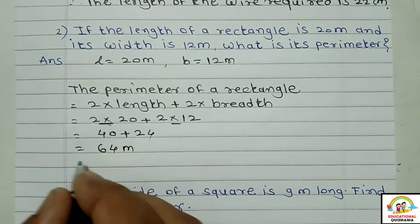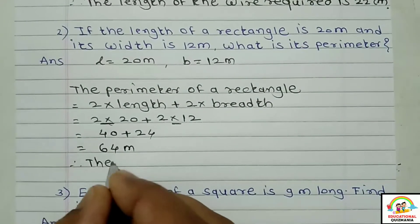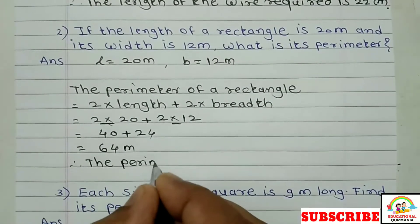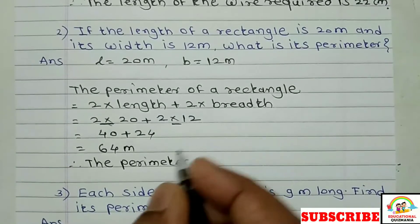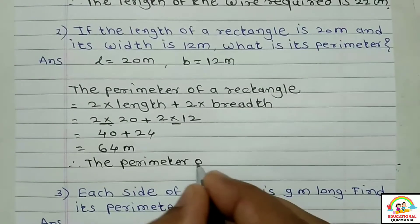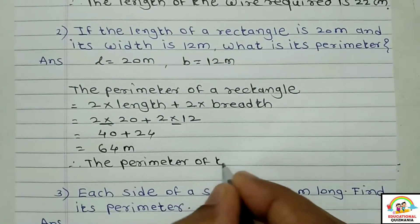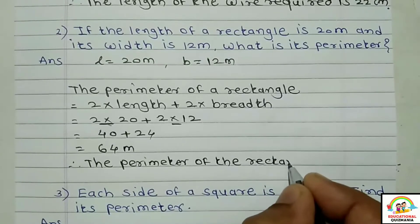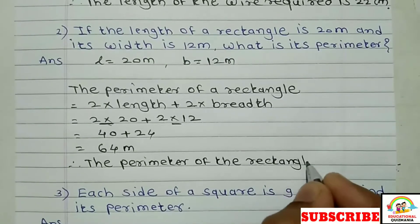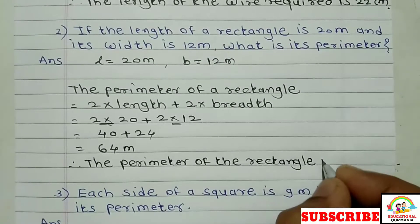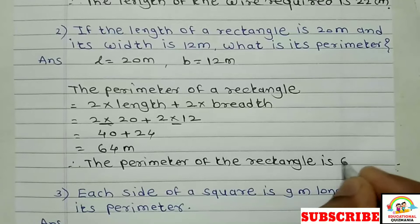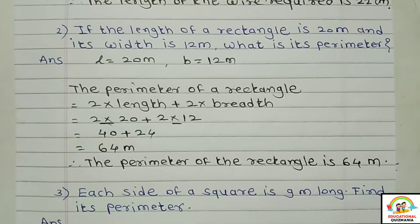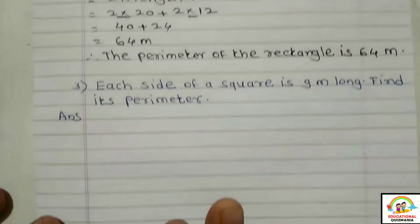Therefore, the perimeter of the rectangle is equal to 64 meters. Question number 3.